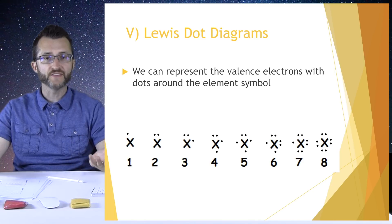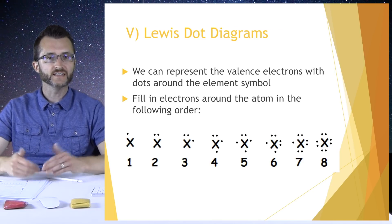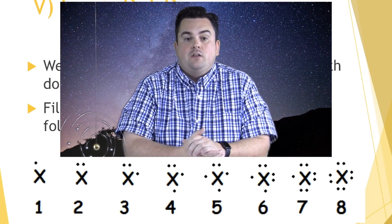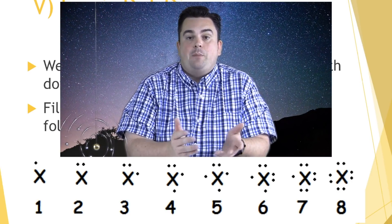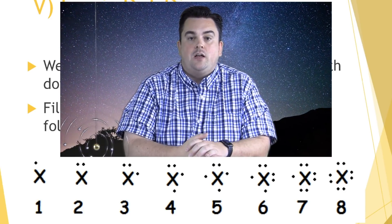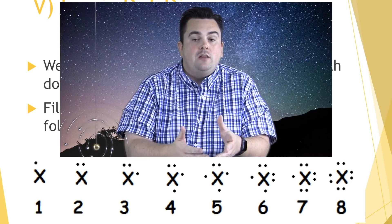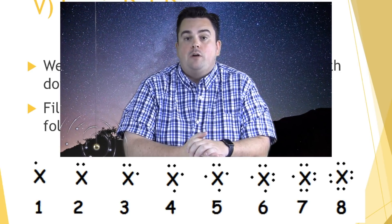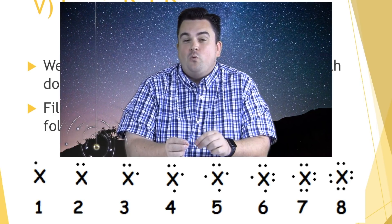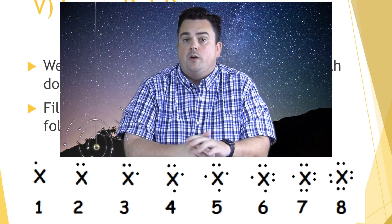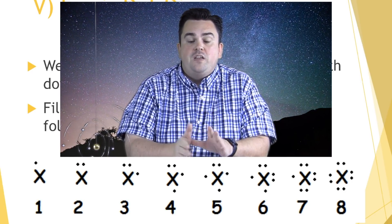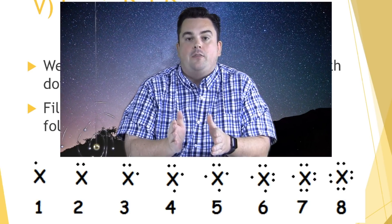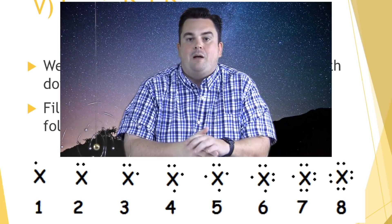Lewis dot diagrams. We can represent the valence electrons with dots around the element symbol. Fill in electrons around the atom in the following order. So when drawing Lewis dot diagrams, it's important to remember the order in which we fill in the dots. Think of the element symbol as a square that has a top, a bottom, a left, and a right. For an element that only has one valence electron, we're going to put that dot on the top. If it has two electrons, we're going to put that second one also on the top. We pair them up right away. Now we're going to progress in a clockwise motion. So the third electron goes on the right. The fourth one is going to go on the bottom. It's not going to pair up with the third one. Now the fifth electron goes on the left. So then when we hit our sixth, seventh, and eighth, now we start to pair those electrons back up.